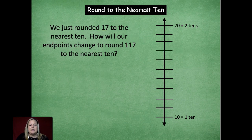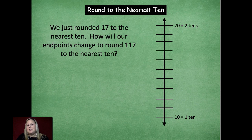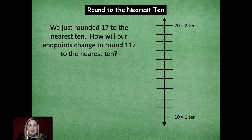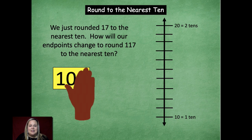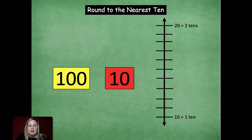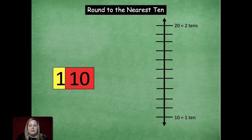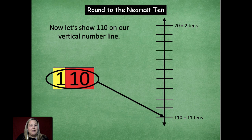So now we're going to step this up a notch with our next part of our problem. We just rounded seventeen to the nearest ten. And how will our end points change if we are now rounding one hundred seventeen to the nearest ten? So we're adding in like another hundred, right. So I'm going to cover it up and I would have ten tens instead and then my other ten from the seventeen. So as I cover that up, cover up your ones and you're left with eleven tens. So that's going to come down to show one hundred ten on the vertical number line. Now it looks like this. So that's eleven tens.